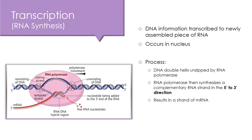Now, let's talk about how information in DNA is made into proteins. The first process is transcription. Transcription is the process by which DNA information is transcribed to a new strand of RNA — specifically messenger RNA or mRNA — and this takes place in the nucleus. Remember, your DNA stays in the nucleus, so your RNA has to be built there initially. The process of transcription starts with RNA polymerase. In transcription, RNA polymerase is what unzips your DNA strands.